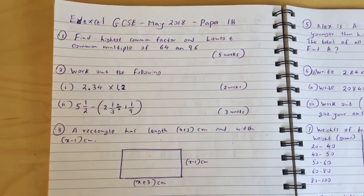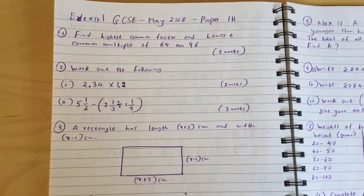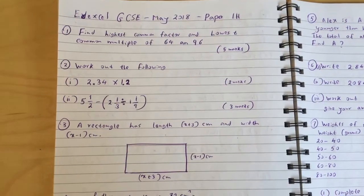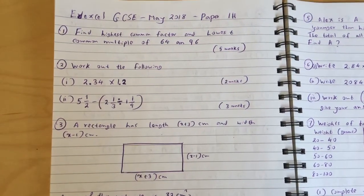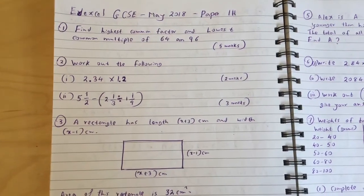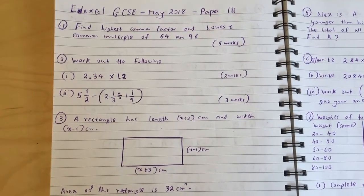Question 1: Find highest common factor and lowest common multiple of 64 and 96. Question 2: Work out the following: 2.34 times 1.2. Part 2: 5 and a half minus bracket 2 and a third divided by 1 and 1/9.